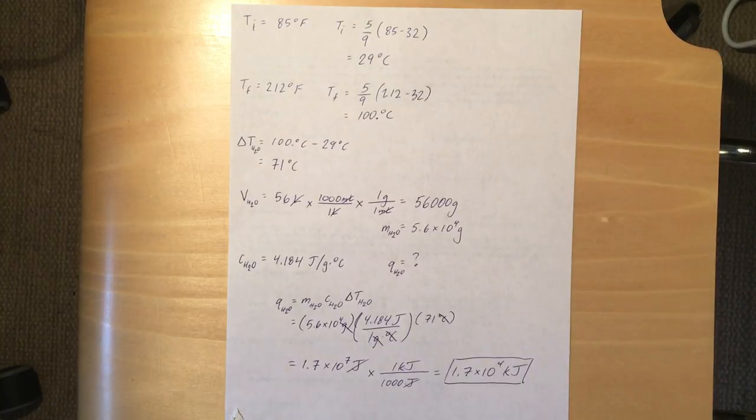Okay, so remember the specific heat of water that's given to you, 4.184 joules per gram degrees Celsius. So those units are important so you can cancel out the rest of your units. And we're looking for how much heat is needed to heat up that water.